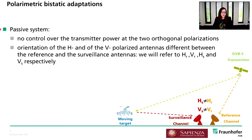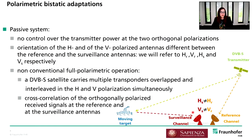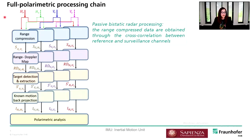Since we are dealing with a passive system, we have no control over the transmitted power at the two orthogonal polarizations. Importantly, the orientation of the H and V polarized antennas differs between the reference and surveillance channels — so from now on I will refer to HR, VR, HS, and VS. When performing the full polarimetric operation, we cannot use the conventional approach as in the active case, since the DVB-S satellite carries multiple transponders overlapping and interleaved in H and V polarization simultaneously. What we do is cross-correlate the orthogonally polarized received signals at both reference and surveillance antennas to obtain the range-compressed signal — the first step of our full polarimetric processing chain.